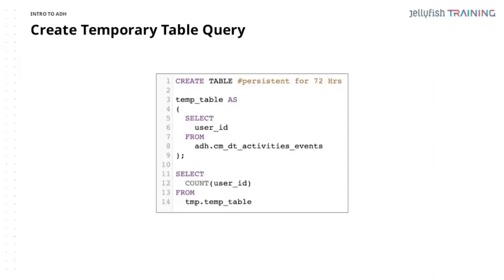I want to discuss the importance of using temporary tables to query in Ads Data Hub. Temporary tables are persistent for 72 hours. The reason we want to use temporary tables is to minimize querying the underlying data within ADH. Because it's a clean room protecting user privacy, querying the same underlying data set too closely means we may be able to identify individual users, which will cause privacy flags. To avoid this, we minimize the number of times we need to query the underlying data set, preventing privacy flags that would restrict our access to that data.